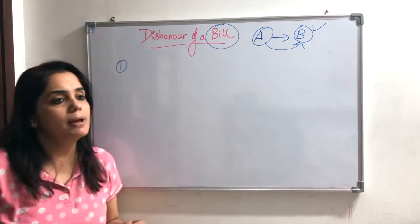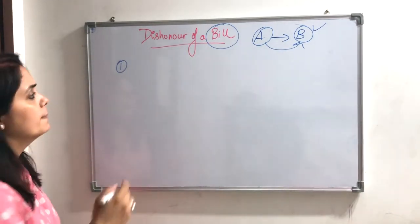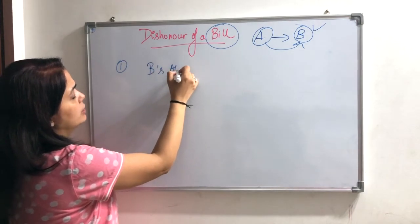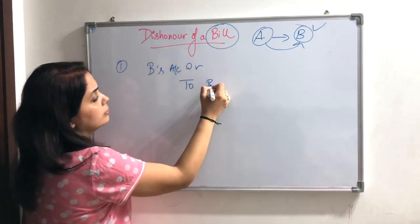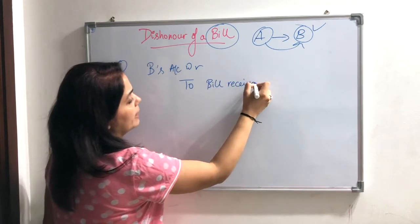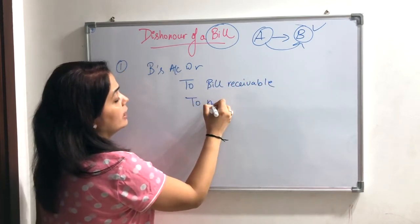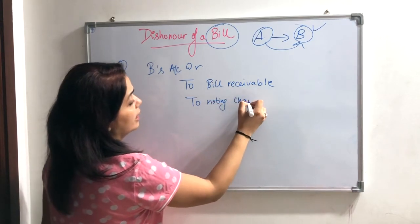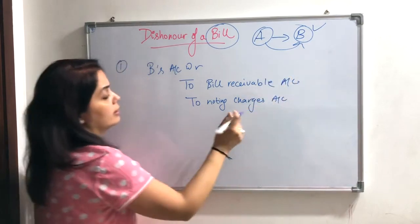B will pay noting charges. In this case, the entry will be in the books of A. The drawee's account — that is, B's account — is debited to Bills Receivable. Why? Because you don't receive money. Plus noting charges, which are the charges that B will bear — actually A will bear initially.